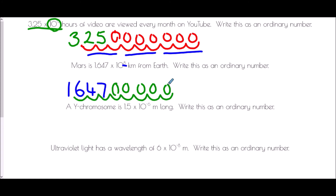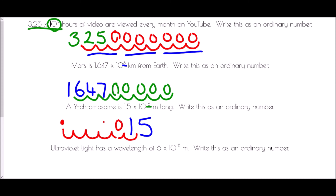A Y chromosome is 1.5 × 10⁻⁶ meters long — write this as an ordinary number. The negative power tells us it's a very small value. Starting with digits 1 and 5, we move six spaces to the left: 1, 2, 3, 4, 5, 6. Adding the decimal point and placeholder zeros — including a zero at the front — gives 0.0000015 meters.